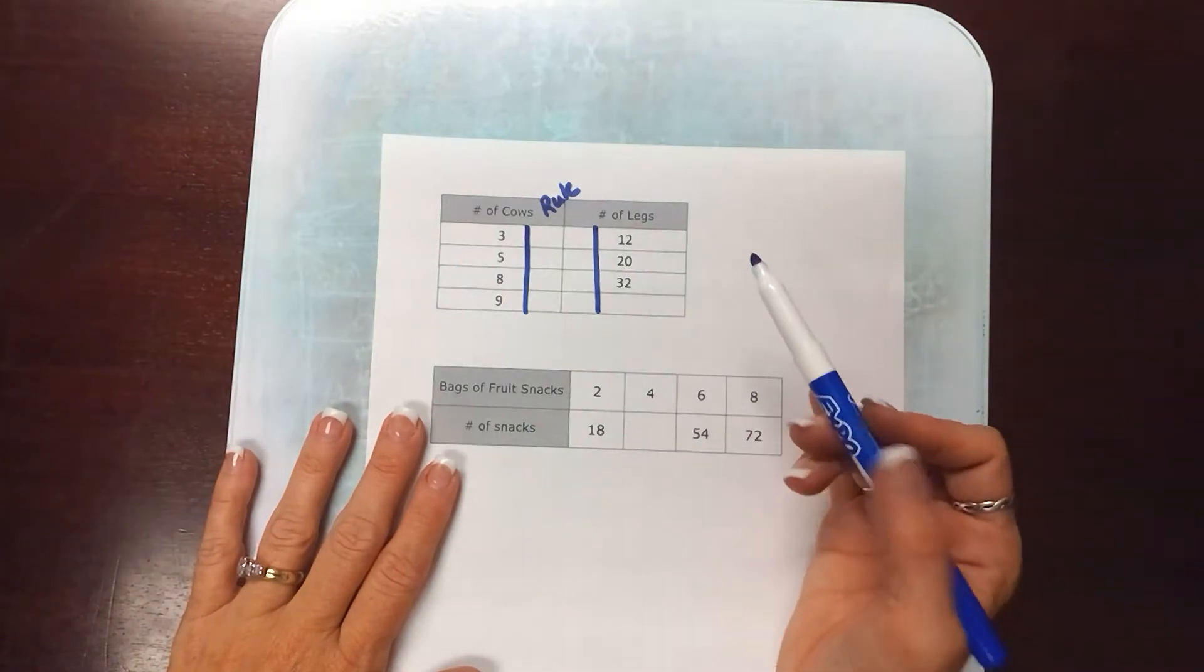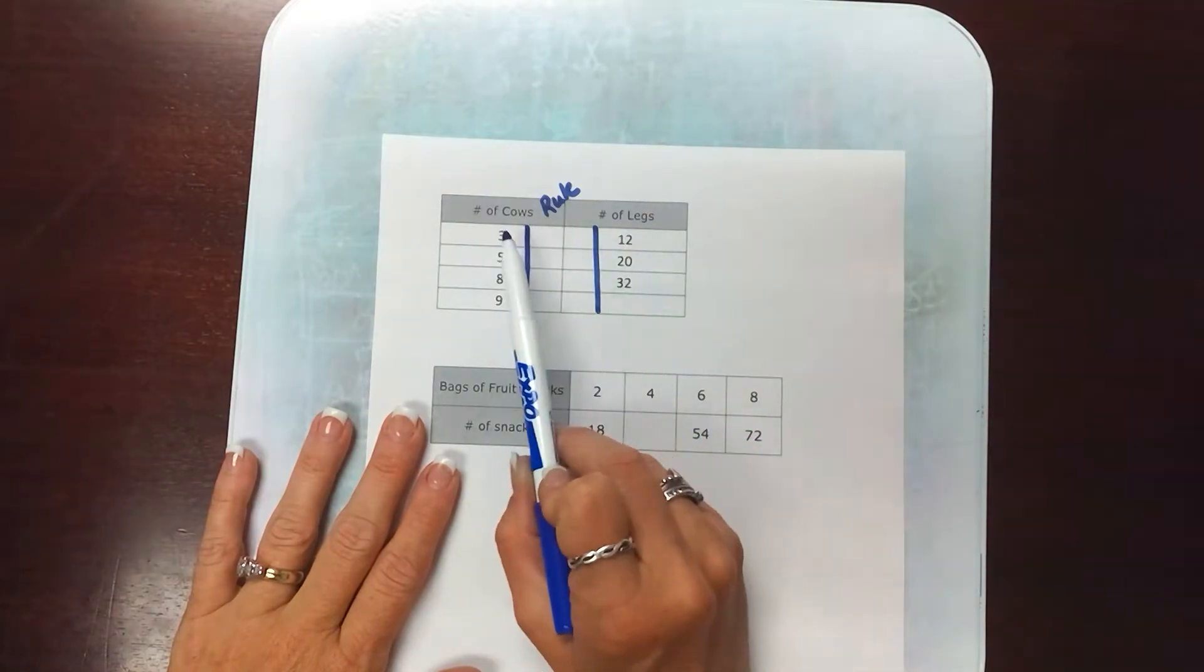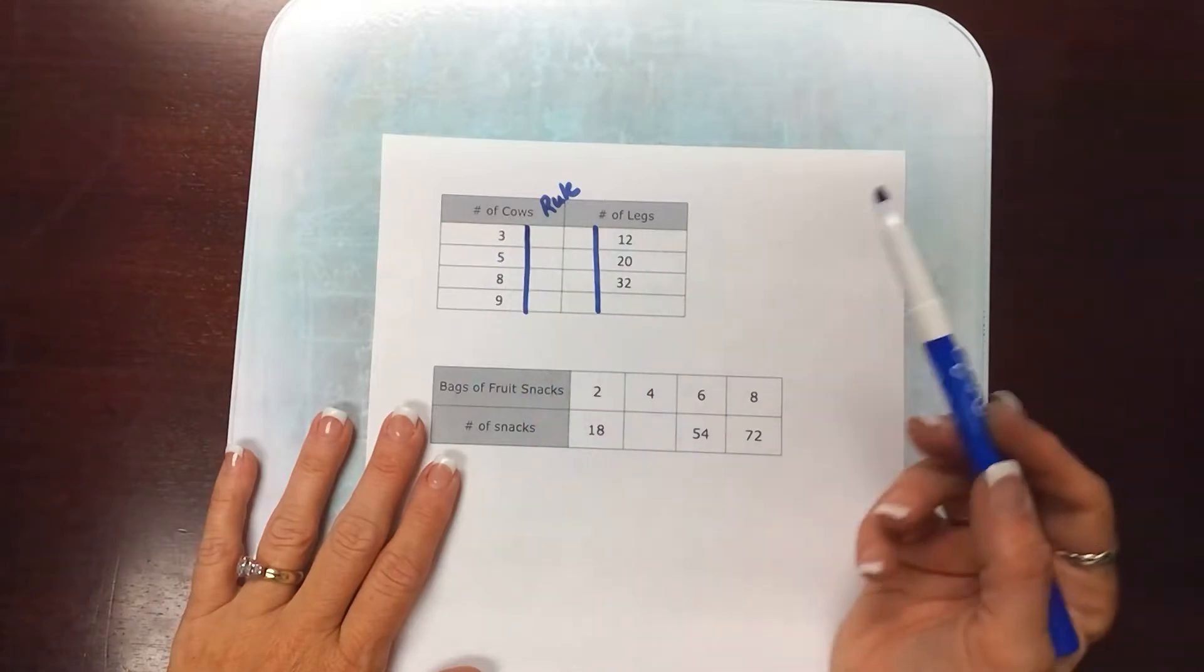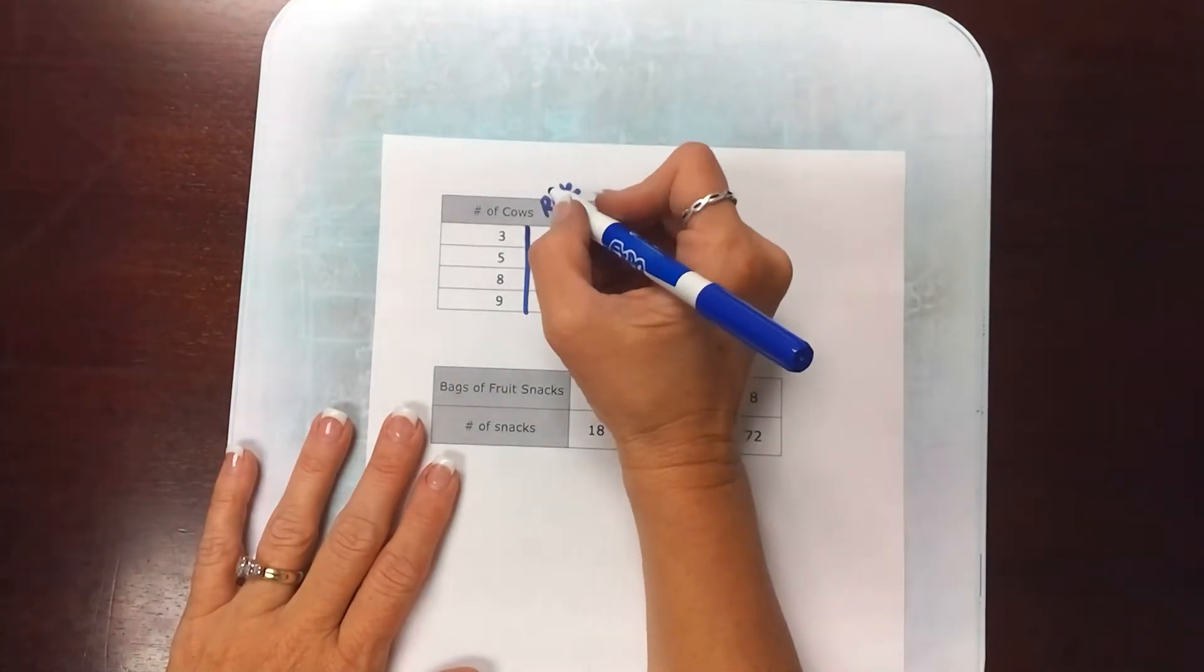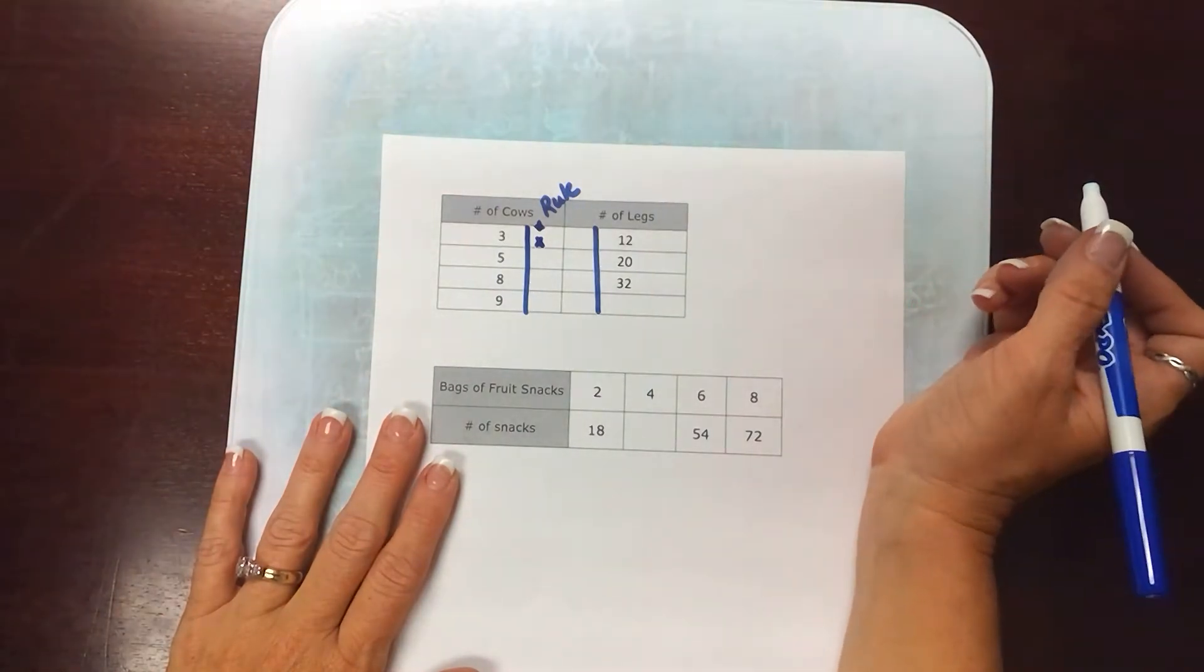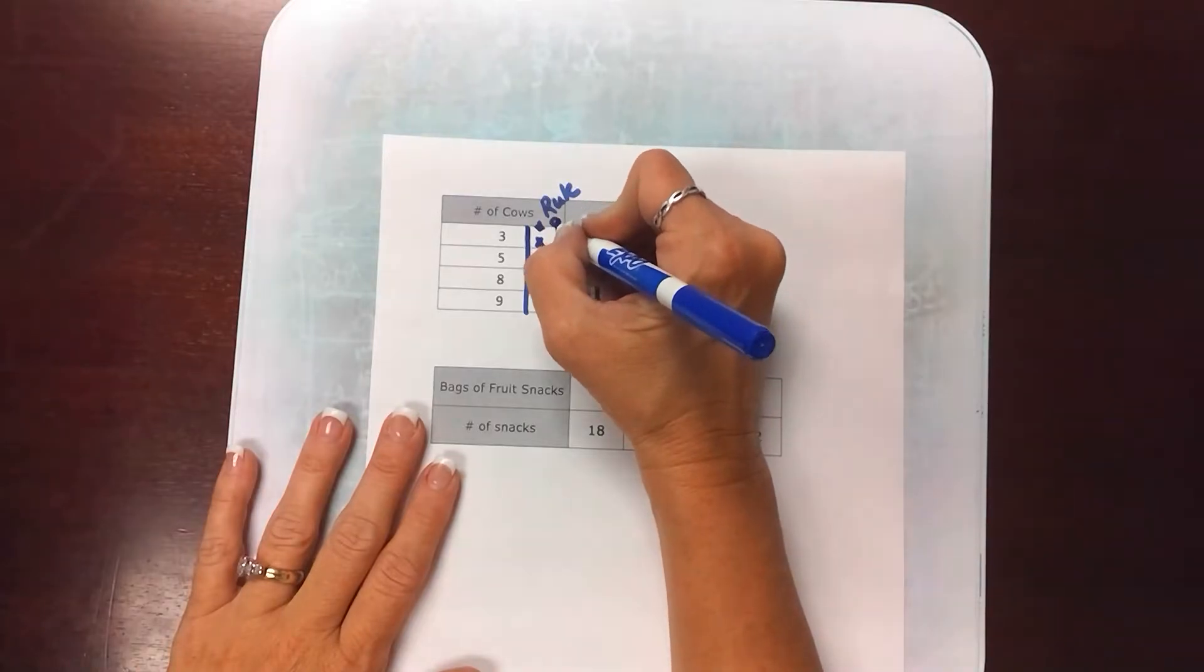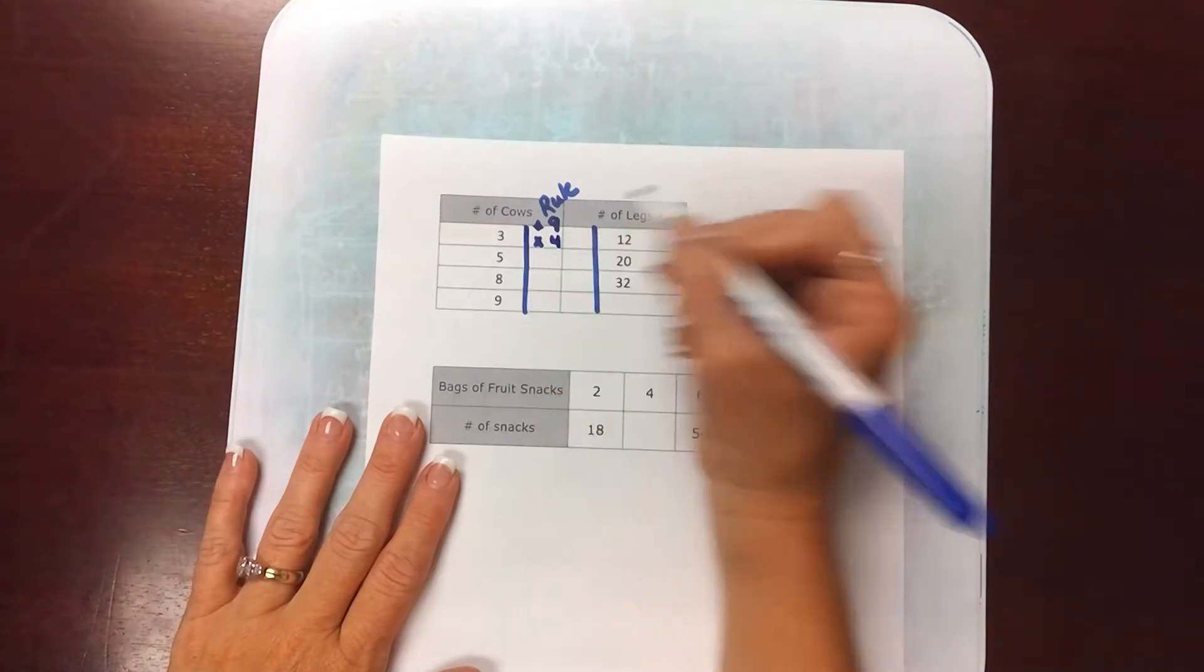When I start out with kids I say okay, number of cows, the number of legs - so I have 3 and 12. Is my output larger or smaller than my input? Of course larger. So what two operations give me a larger number? They're going to say well addition and multiplication. Okay so what would I have to add to 3 to get 12? I would have to add 9. What would I have to multiply 3 by to get 12? I would have to multiply by 4.